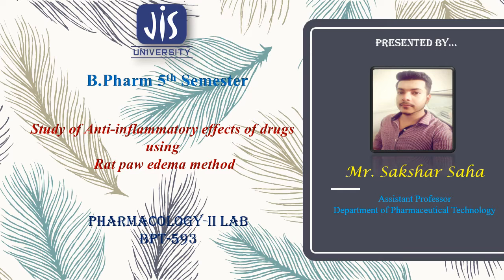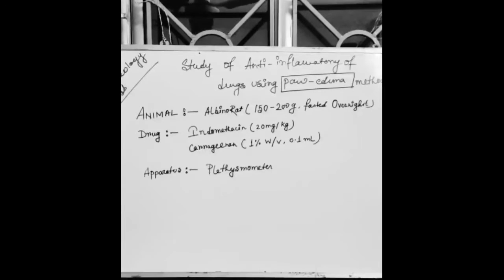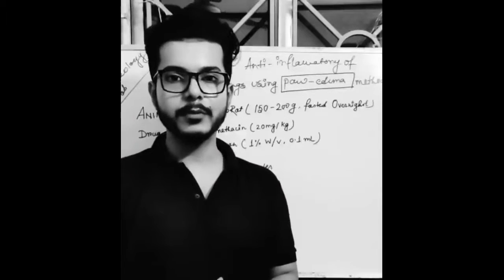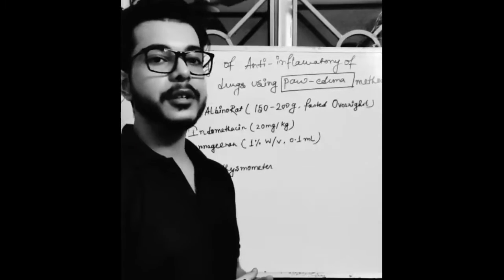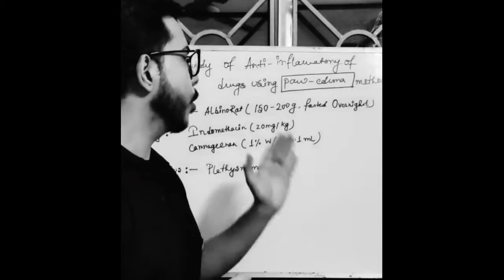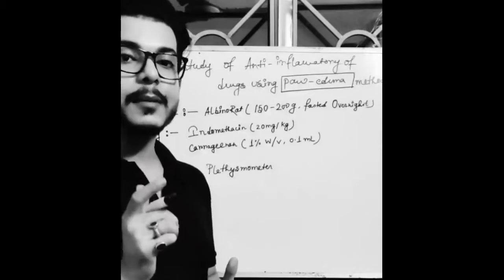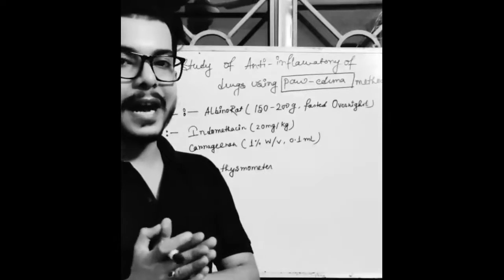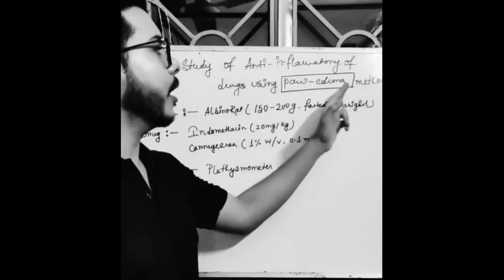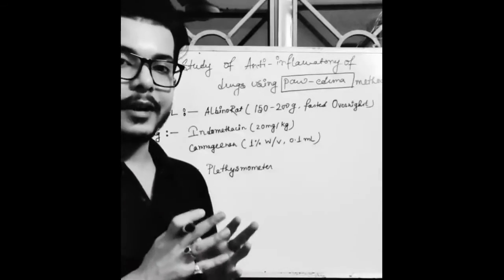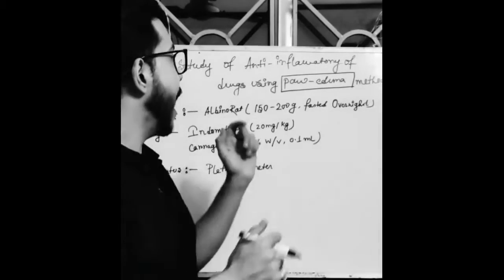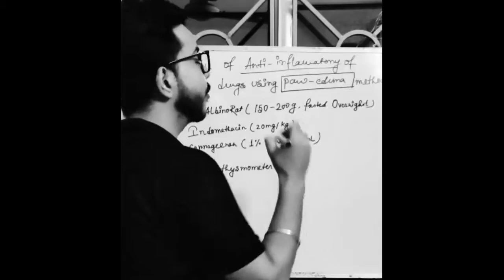So this is a lab we are going to discuss — the theoretical part — and later on if we have the possibility, we can perform that in our laboratory and show you how we can actually perform all these pharmacological experiments in reality. The lab we are going to perform today is study of anti-inflammatory effect using a drug by using the paw-edema method in the biological system, which is rat.